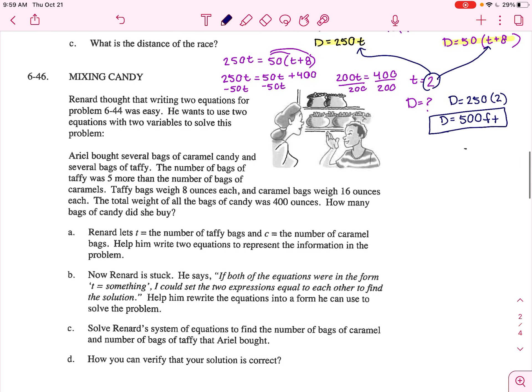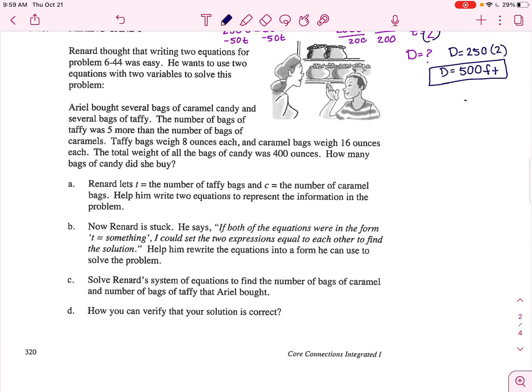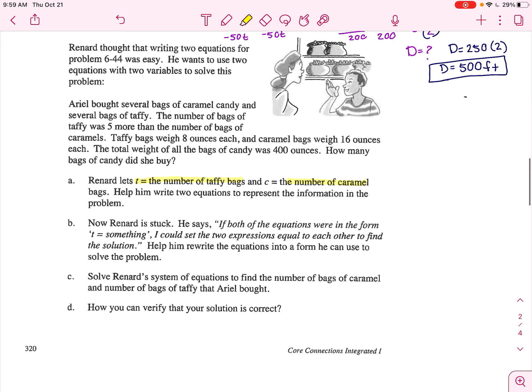Okay. Now we are buying bags of candy. We're buying taffy bags and we're buying caramel bags. So it gives us all this information up here. It says the number of bags of taffy was five more than the number of bags of caramel.